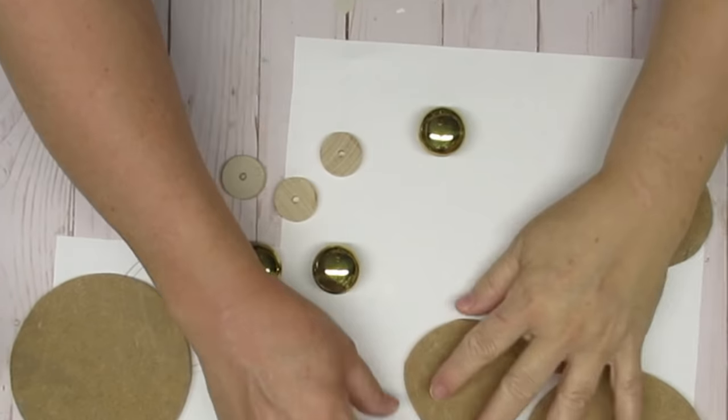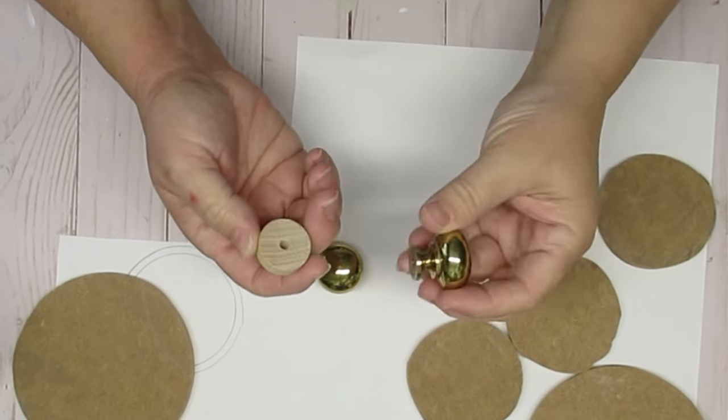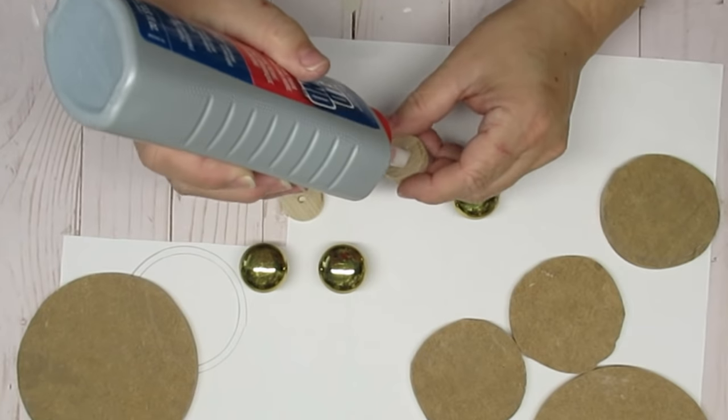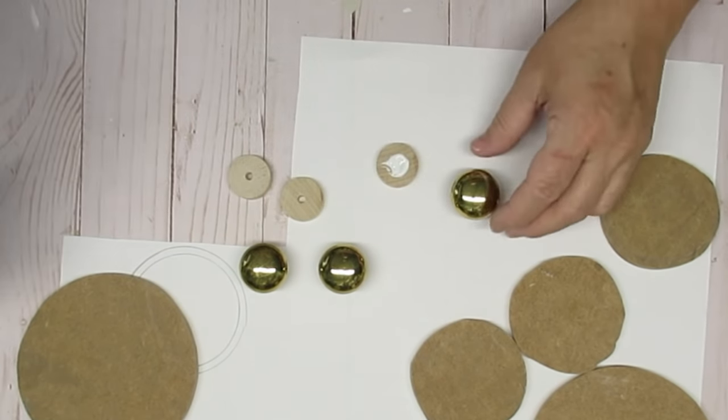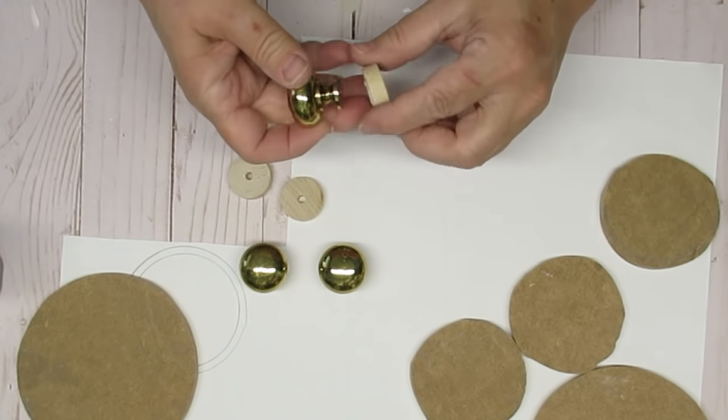So here are all my circles. You can see that a couple of the smaller ones are a little wonky. That's okay. I've sanded them down to make them as round as I can, and now I'm going to be gluing these kitchen knobs.